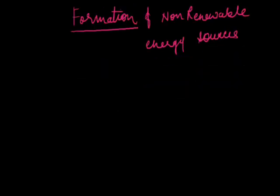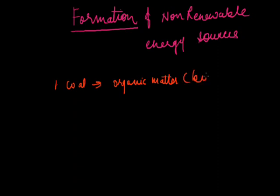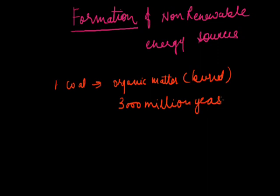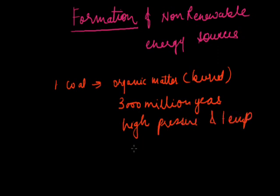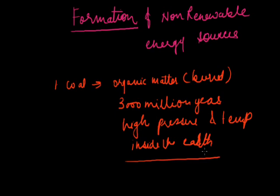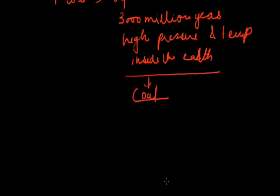There are two non-renewable energy sources. The first is coal. How it is formed: it is actually formed from organic matter which got buried under the earth about 300 million years ago. When it is subjected to very high pressure and temperature inside the earth, this organic matter is converted into coal, which is a non-renewable source of energy.